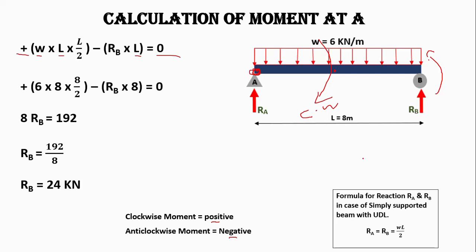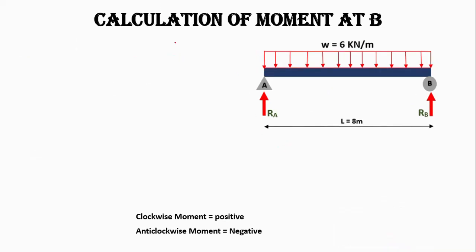We can also calculate the support reaction of a simply supported beam with uniformly distributed load using the formula wL/2, where w is the uniformly distributed load, L is the total length over which the UDL acts, divided by 2 to get the reactions Ra and Rb. Similarly, we will now calculate the support reaction at point B.